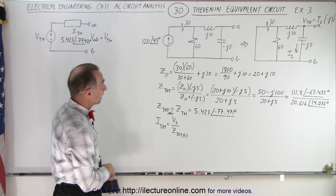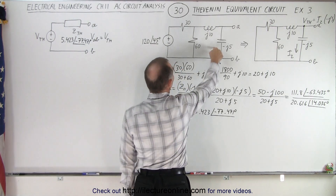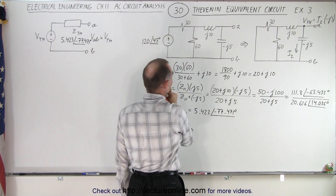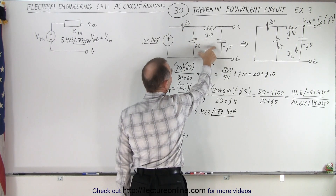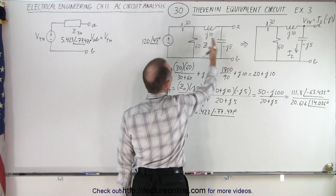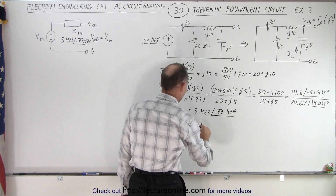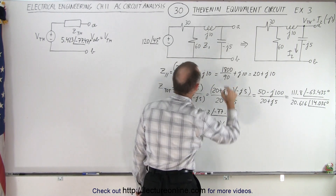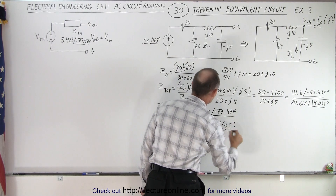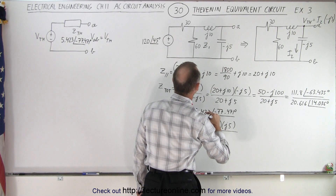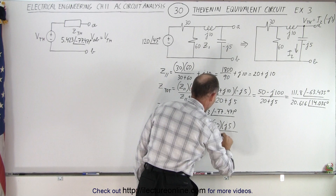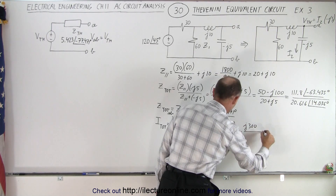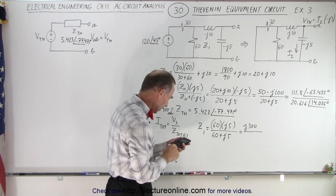We have the inductor and capacitor in series, and those two are in parallel with the 60-ohm resistor, and that combination is in series with the 30-ohm resistor. Let's call the parallel combination Z1. Z1 equals the product over the sum: 60 times j5 divided by 60 plus j5, which gives j300 divided by 60 plus j5.